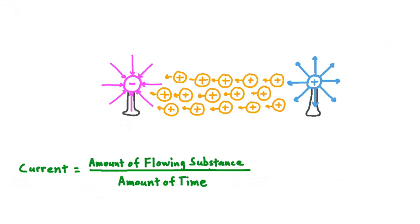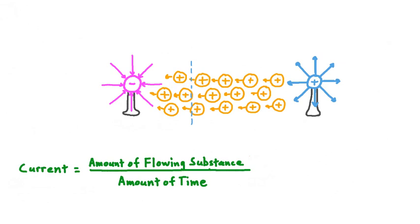We could quantify this current according to the same relationship. Let's say we put a dashed line across the path of our moving electric charge, and then over some amount of time — say one second — we count just how many of these positive charges flow past our line. When our current consisted of flowing water, we didn't need to measure individual water molecules to measure the current overall. But now our flowing substance is electric charge, so it will be important to know just what is the electric charge of each one of these moving charges.